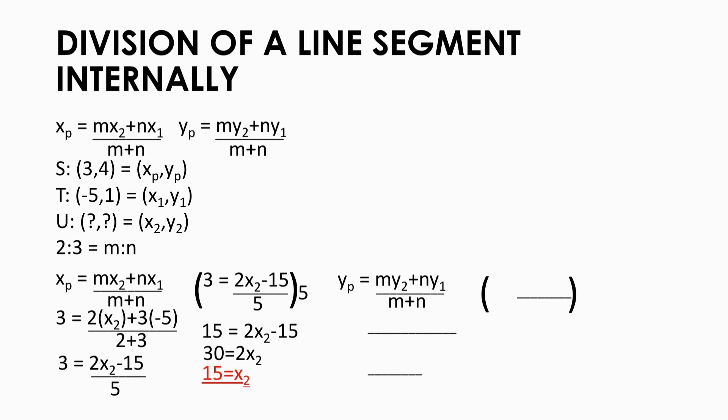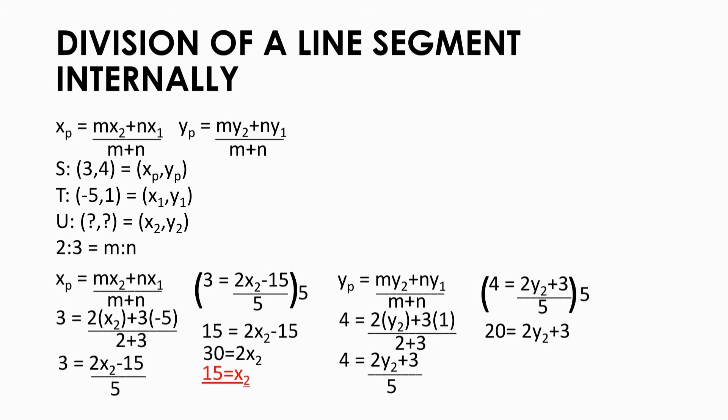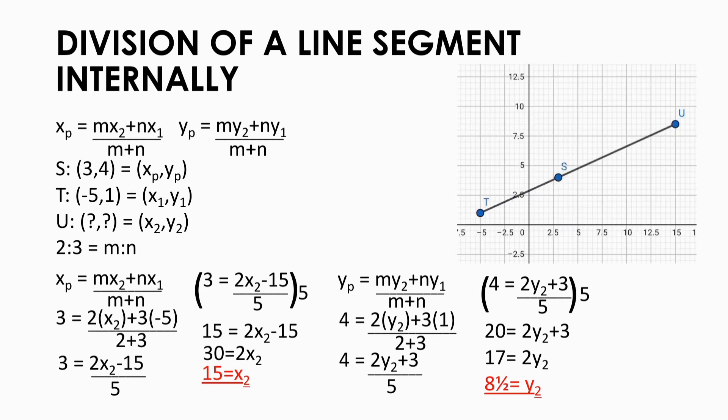Next is to find y sub 2. Substitute the values: y sub p is 4, m is 2, y sub 2 is still unknown, n is 3, y sub 1 is 1, and m plus n is 2 plus 3. Simplify to get 4 equals 2 times y sub 2 plus 3, all over 5. Multiply both sides by 5 to get 20 equals 2 times y sub 2 plus 3. Add negative 3 to both sides to get 17 equals 2 times y sub 2. Divide both sides by 2 to get y sub 2 equals 8 and one half. Now we have both coordinates: plot x sub 2, y sub 2, which is (15, 8½). And we are done.